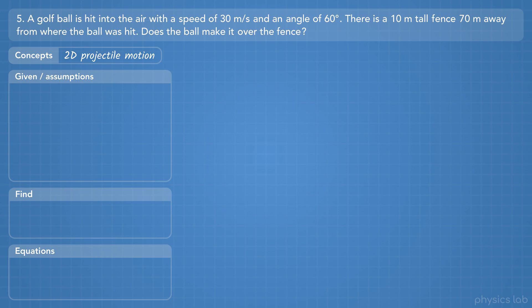A golf ball is hit into the air with a speed of 30 m per second and an angle of 60 degrees. There is a 10 meter tall fence 70 meters away from where the ball was hit. Does the ball make it over the fence?